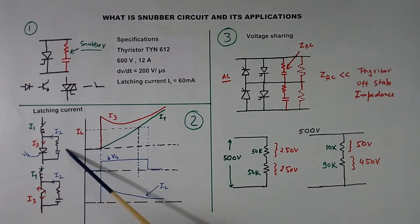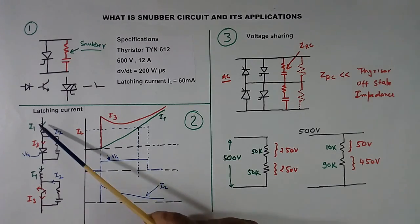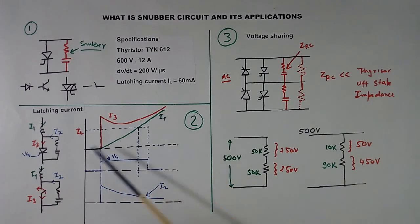Now how does RC help? When this thyristor becomes on, this capacitor will discharge through this resistor like this. This I2 current is shown here. This is RC current. This current I1 was this green color current. In thyristor, this current plus this current, both will flow.